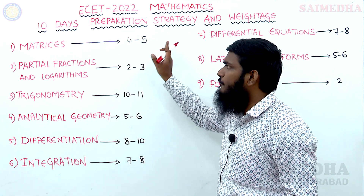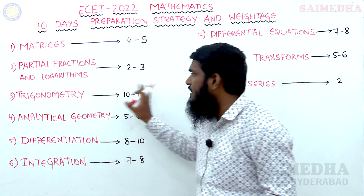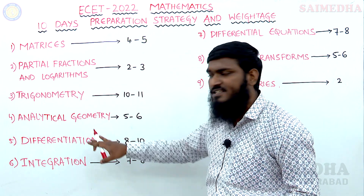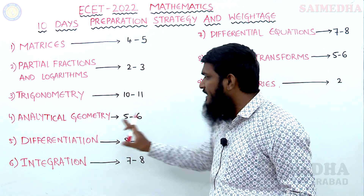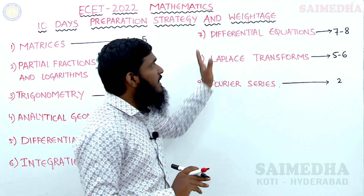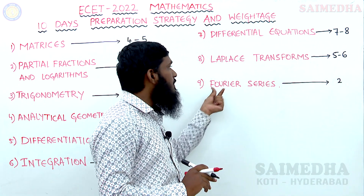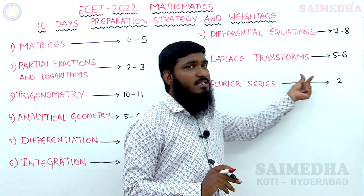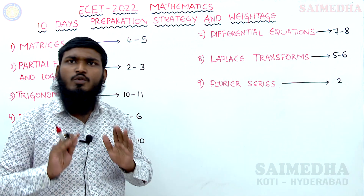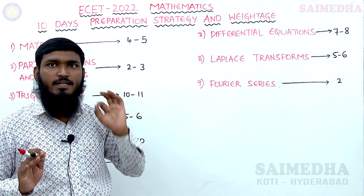To summarize the weightage: Matrices — 4 to 5 marks; Partial Fractions and Logarithms — 2 to 3 marks; Trigonometry — 10 to 11 marks; Analytical Geometry — 5 to 6 marks; Differentiation — 8 to 10 marks; Integration — 7 to 8 marks; Differential Equations — 7 to 8 marks; Laplace Transforms — 5 to 6 marks; Fourier Series — 2 marks.